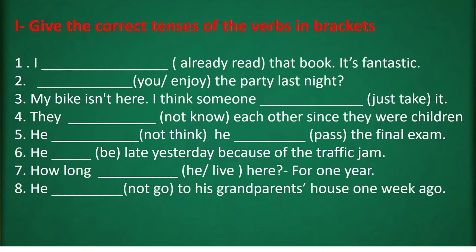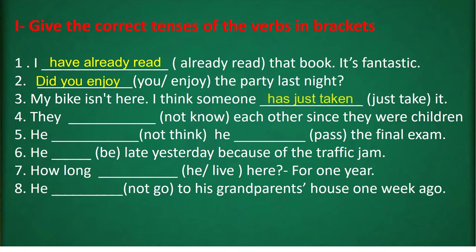Time is over, let's check the answers. Sentence 1: we use the Present Perfect tense because of the word 'already' — the answer is 'have already read': I have already read that book; it's fantastic. Sentence 2: we use Past Simple — did you enjoy the party last night? Sentence 3: we use Present Perfect — the answer is 'has just taken': my bike isn't here, I think someone has just taken it. Sentence 4: negative form of Present Perfect — the answer is 'haven't known': they haven't known each other since they were children.